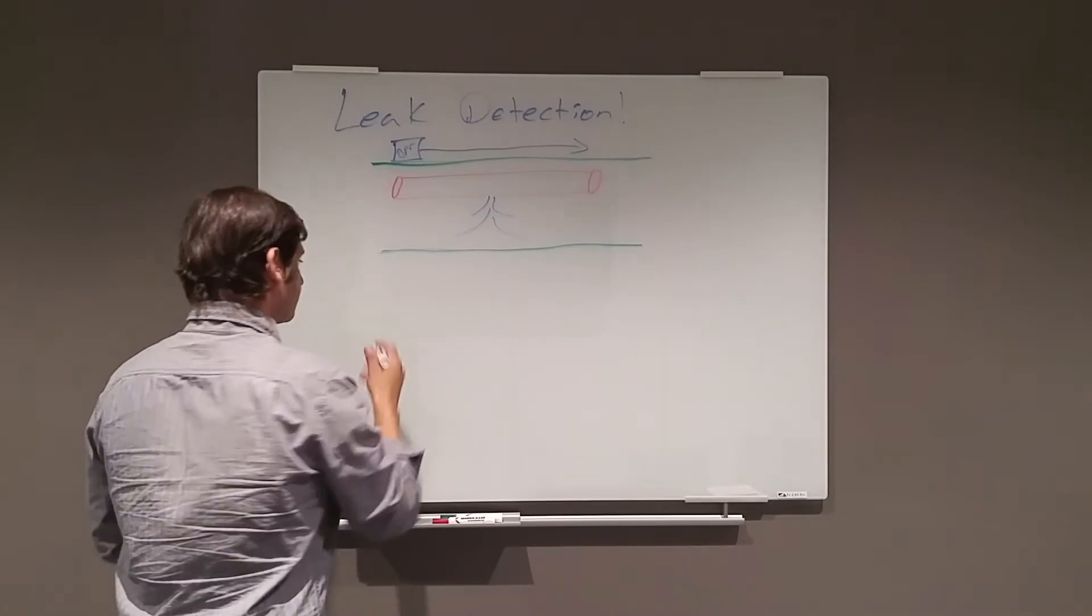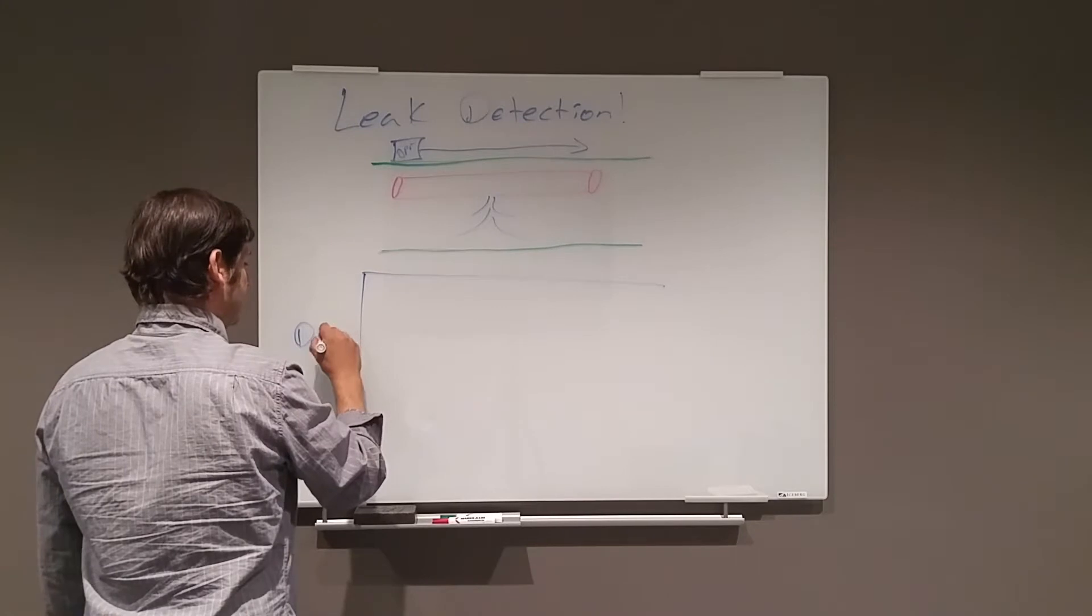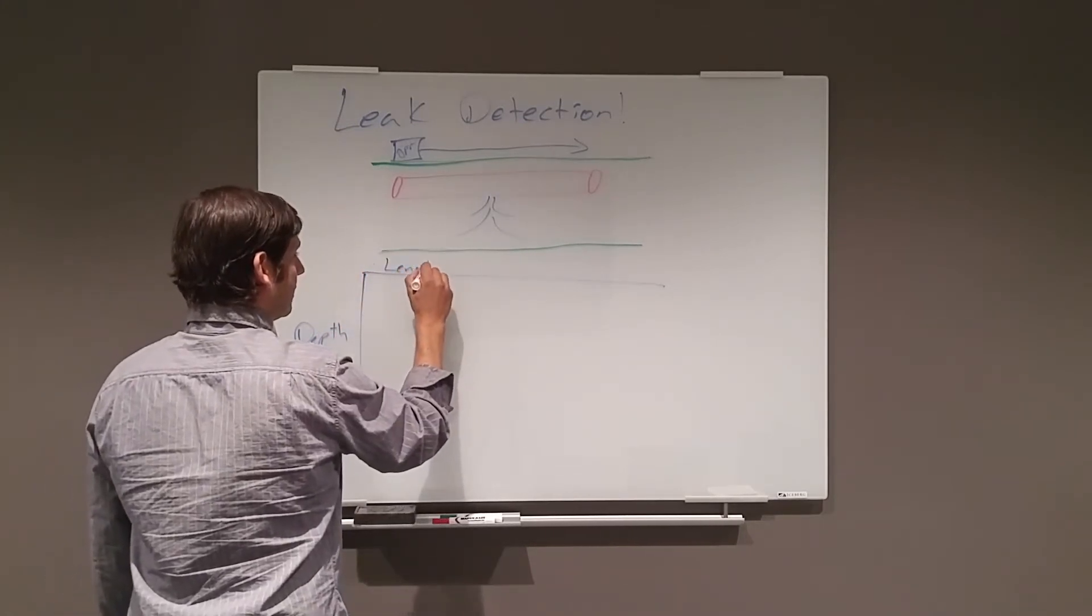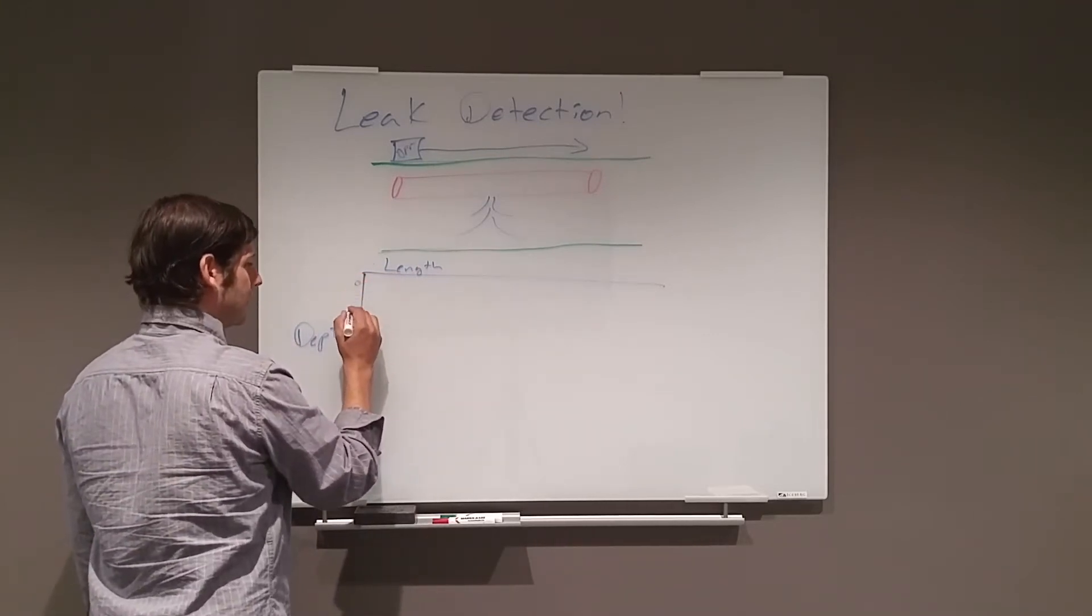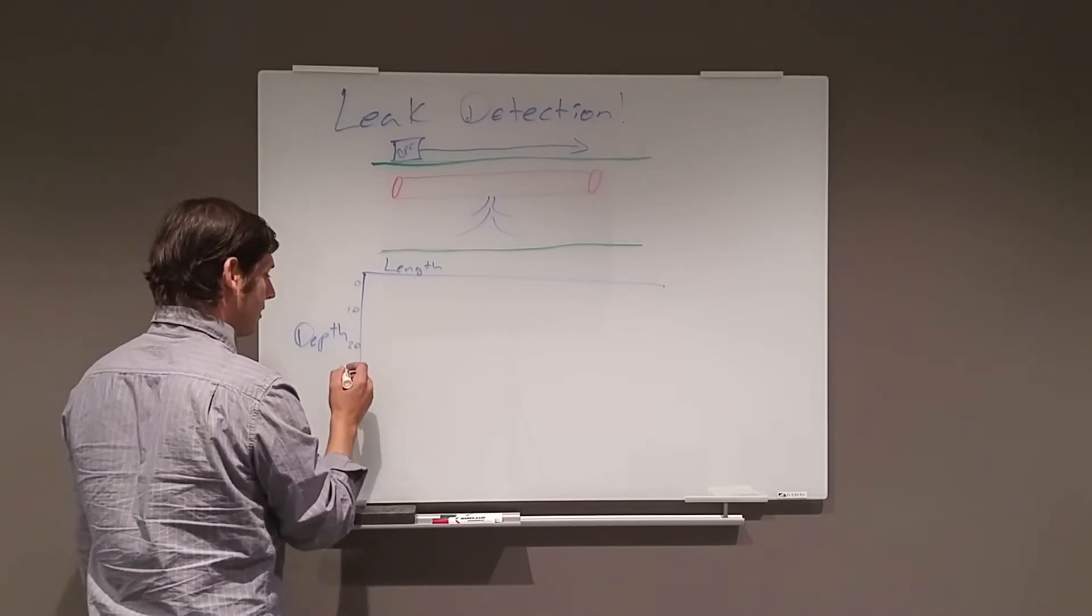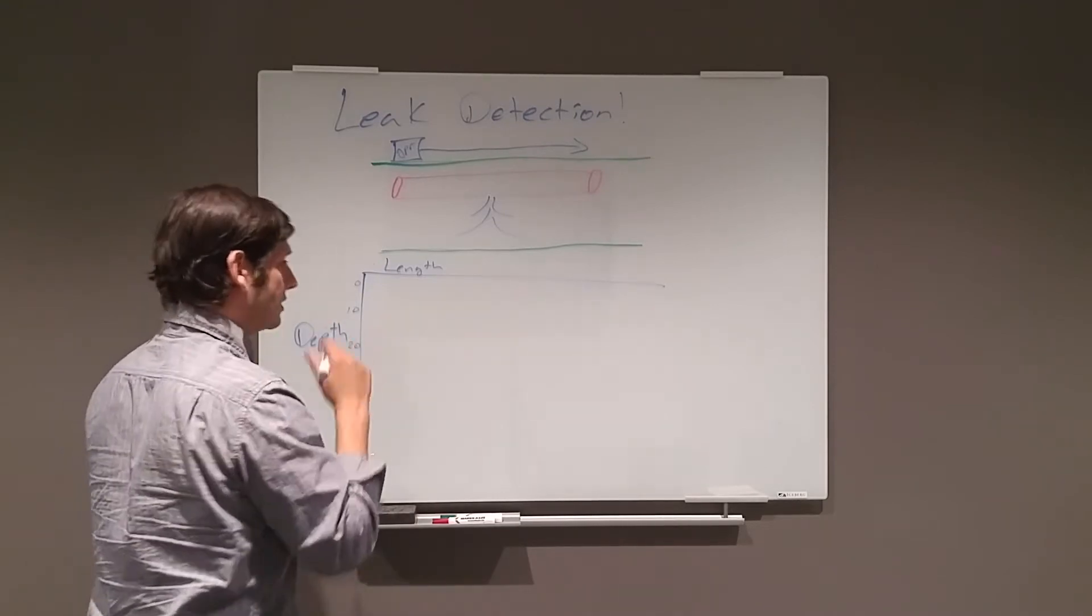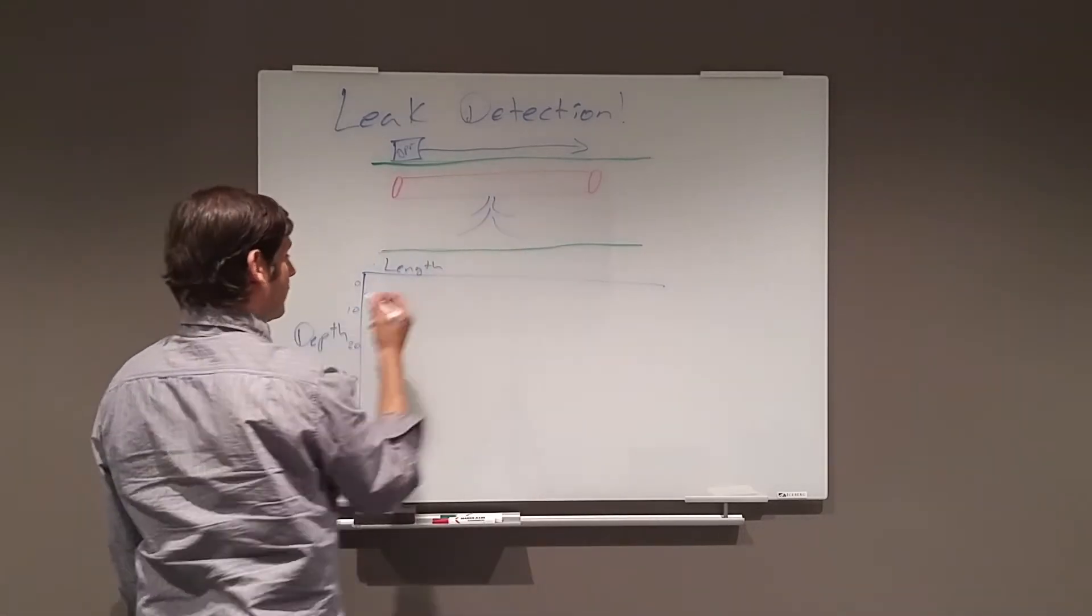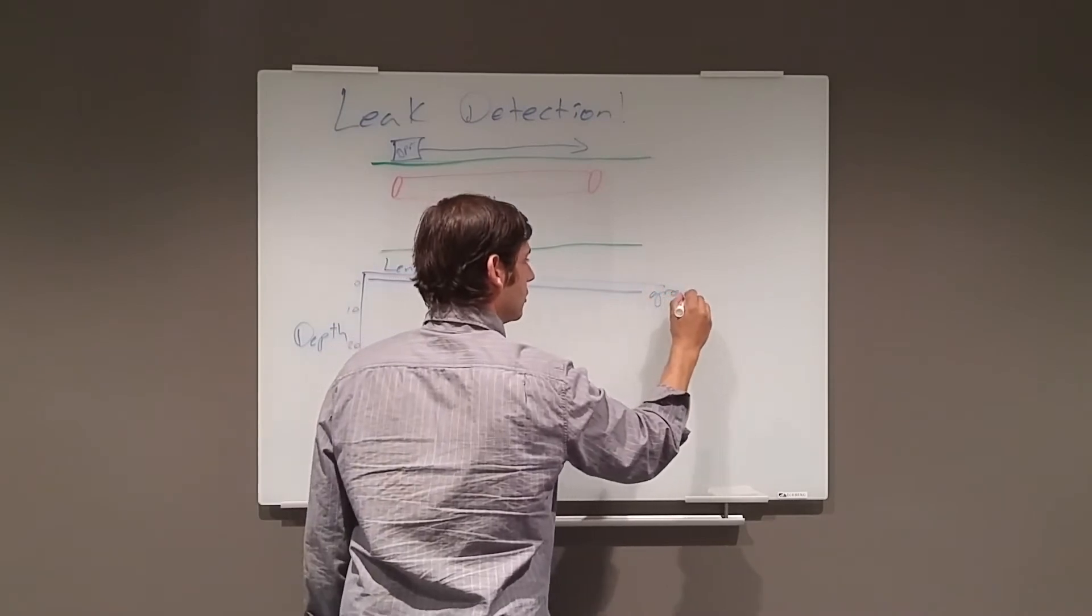And what you're going to see then in a profile view, so this is depth and then this is length. The first thing that you're going to see, you have like zero nanoseconds, 10 nanoseconds, 20, or you can even say centimeters, 20, 30 centimeters, 40 centimeters, et cetera. First thing you're going to see is a high reflection off of your ground surface. That's your first reflection. So this is your ground.